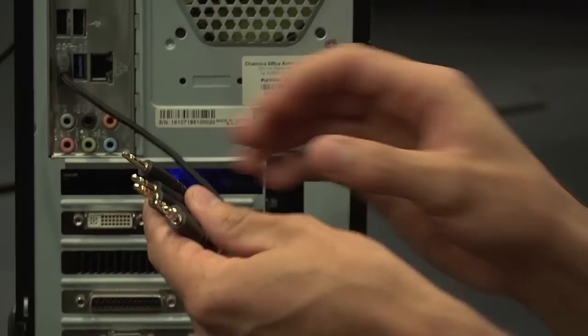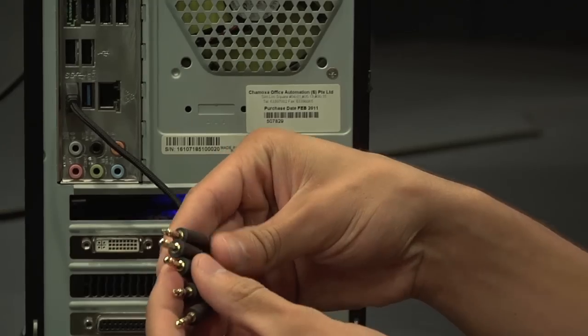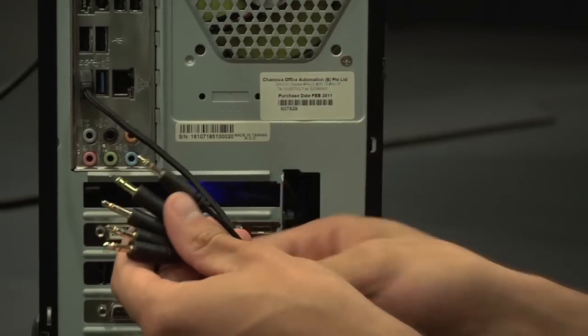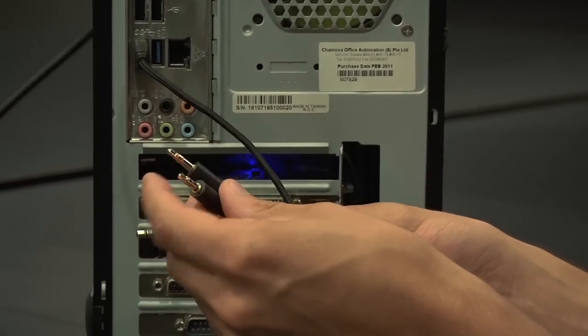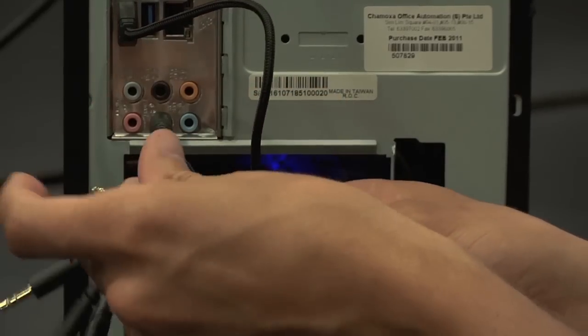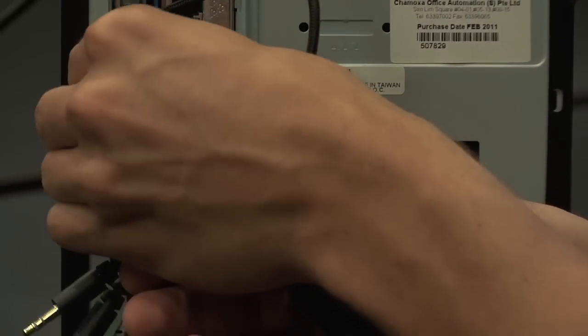Now you're only left with a couple of 3.5 millimeter jacks. Because this headset is an analog surround sound headset, you want to plug all these jacks in for each audio channel. For basic functionality you need the green jack for the stereo surround channel as well as the pink jack for the microphone capability of the headset.